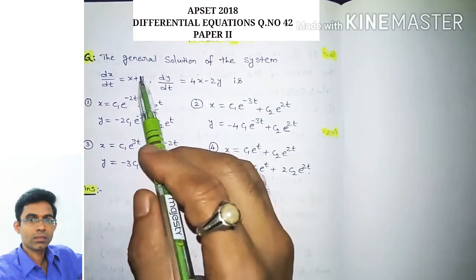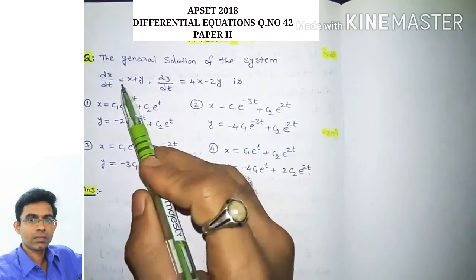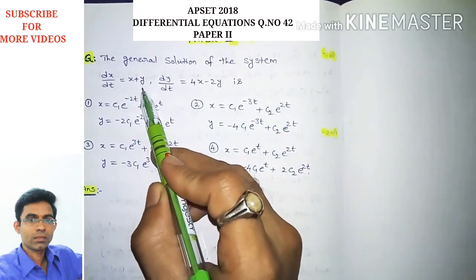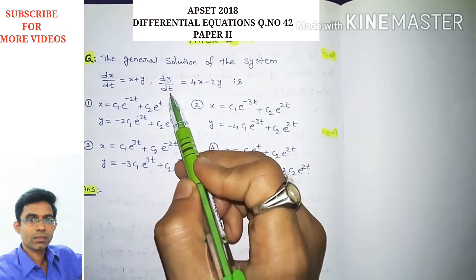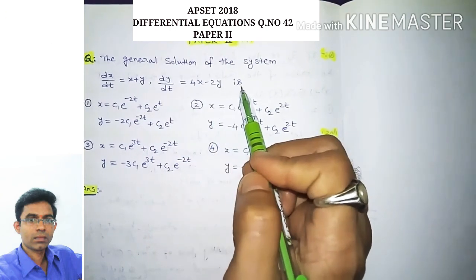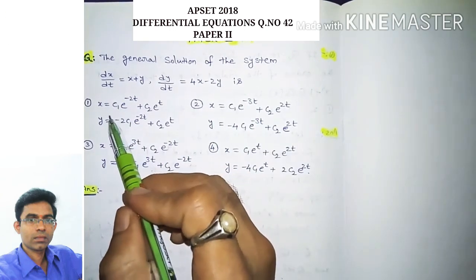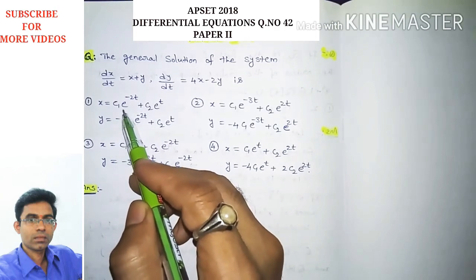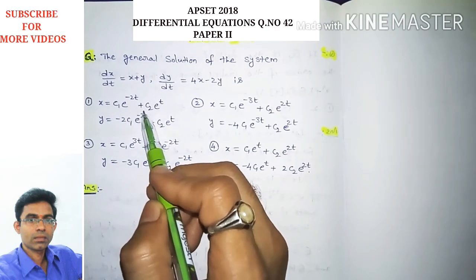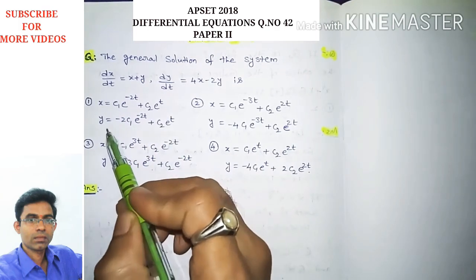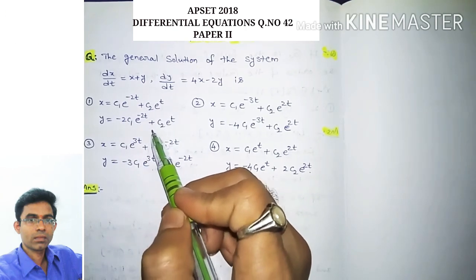The question is: the general solution of the system dx/dt = x + y, dy/dt = 4x − 2y. Option 1: x = c1·e^(−2t) + c2·e^t, y = −2c1·e^(−2t) + c2·e^t.